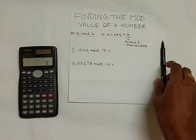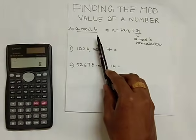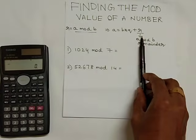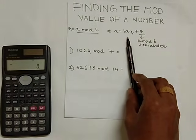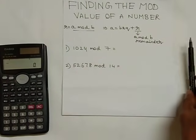For a particular number A, mod B implies the remainder R which is obtained when A is divided by B. So let us see how to find that value in a calculator.